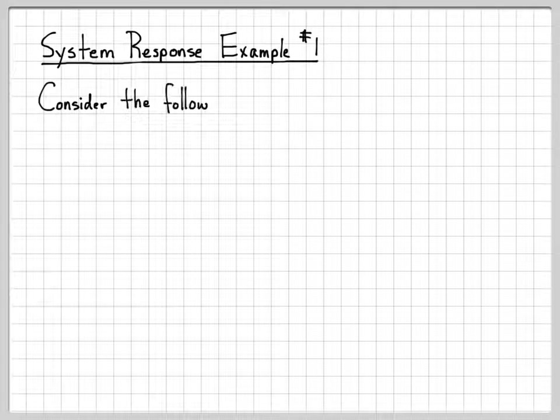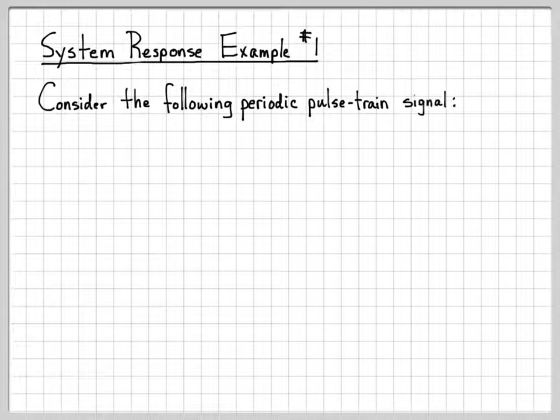In this example, we're going to look at the response of a system to a periodic input. So we're going to find out what the output of the system is, given some signal input to the system. We've done this type of problem before. The main difference in this example is we'll be doing the analysis using frequency domain concepts that we've been working on.